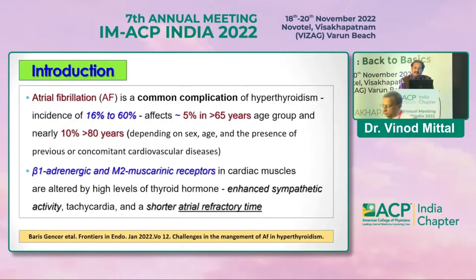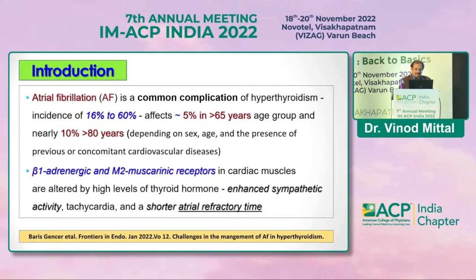Atrial fibrillation is a very common complication that we are missing quite often. We need to be more conscious and look for it more frequently. It is very common in hyperthyroidism — in almost half of patients overall, and in those over 65 years it is 5 percent even as isolated AF, and 10 percent in those over 80 years.